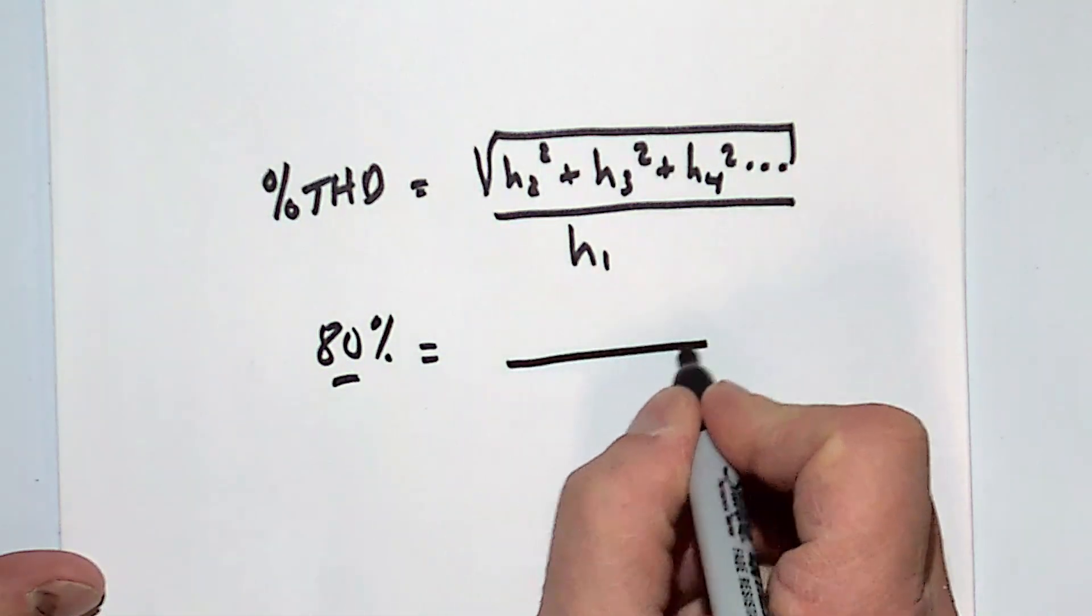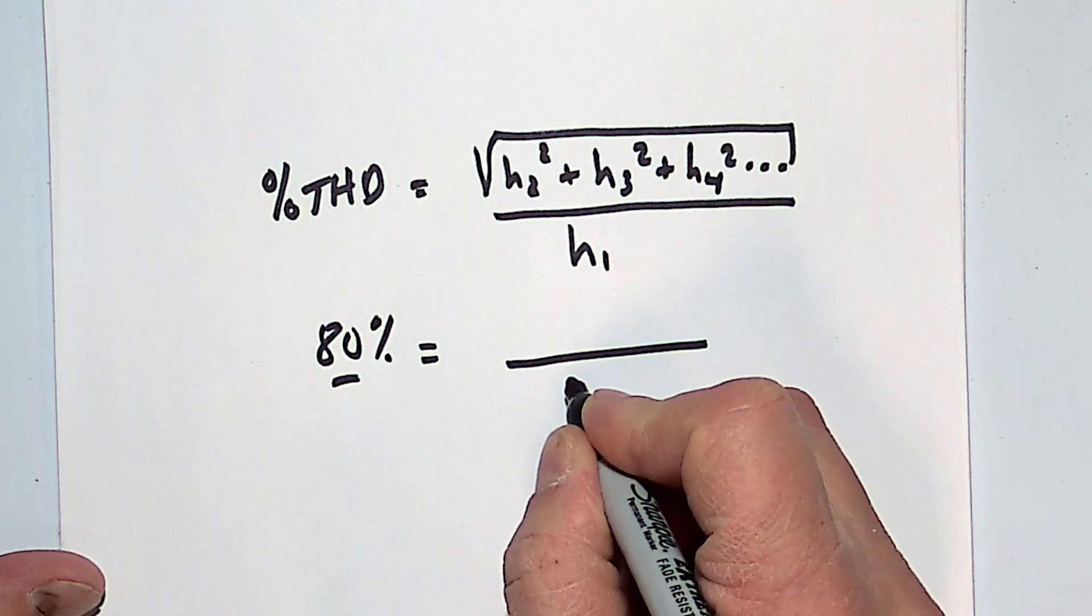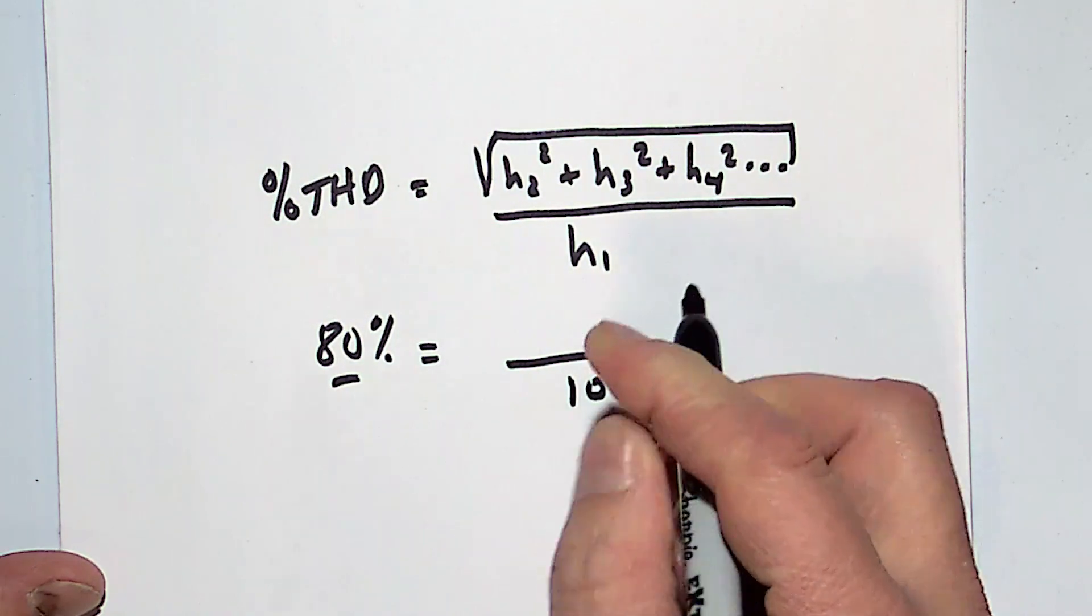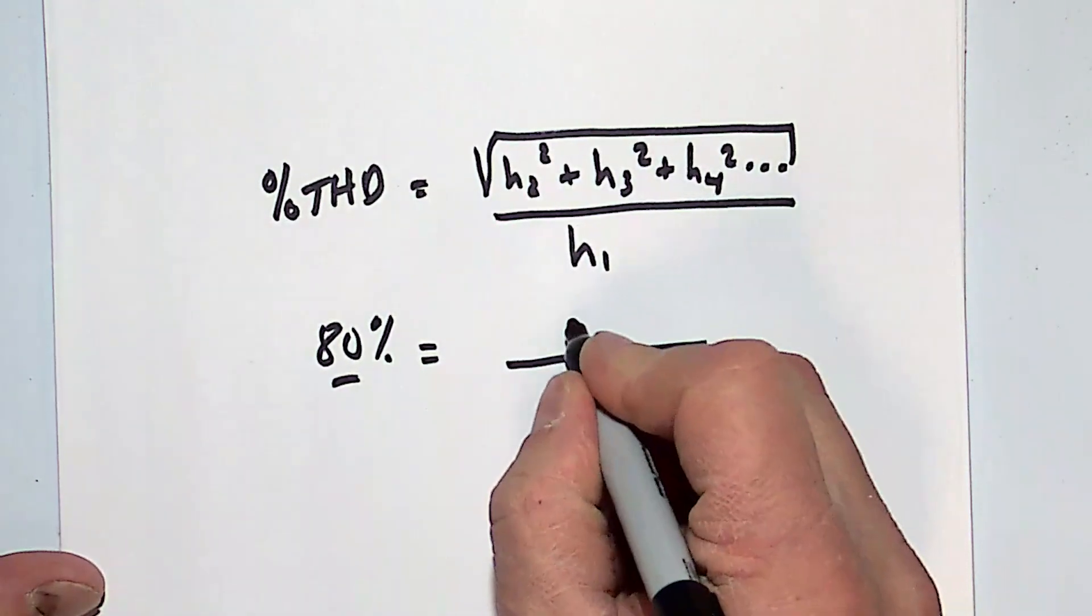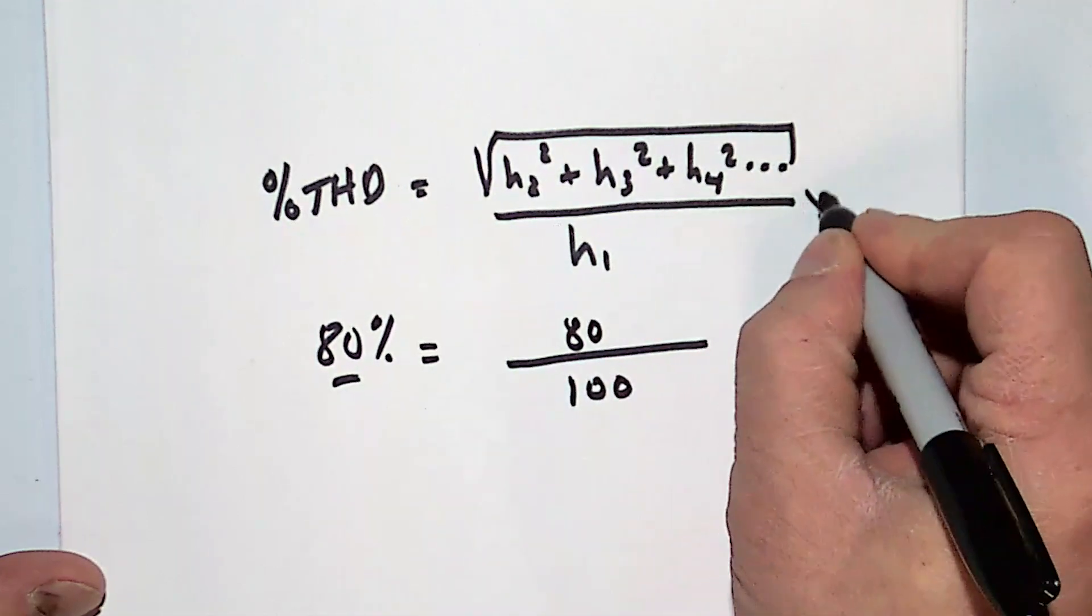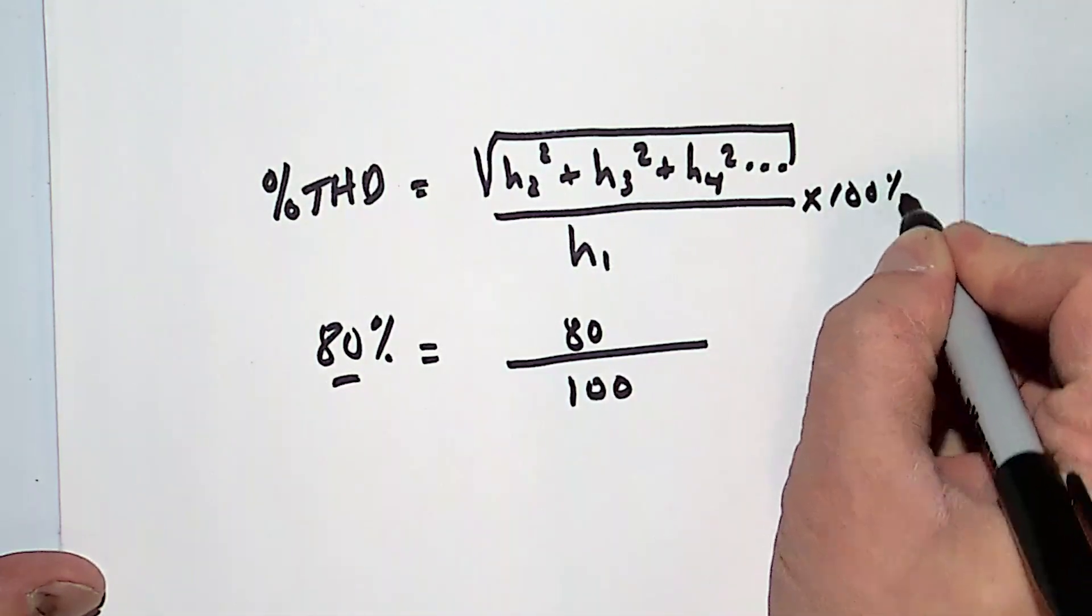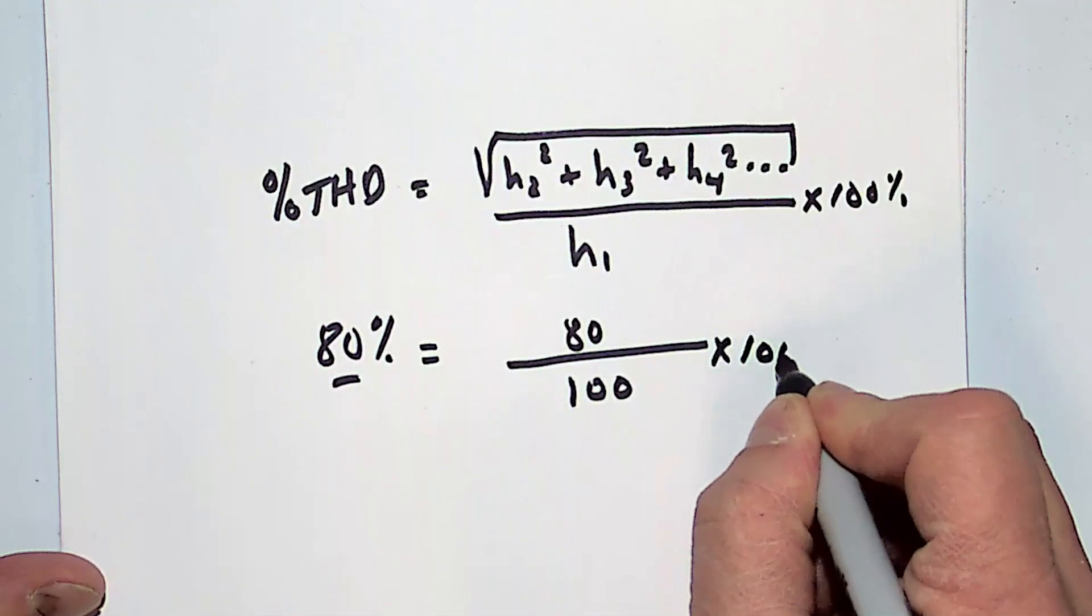And that gives me my 80% distortion. So you can see that 80 amps here is important to understand. What I can do to change this quickly, to change the distortion level, is what if I change my fundamental?